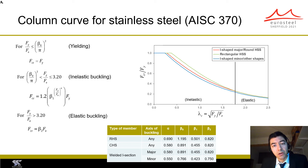The continuous strength method permits achieving design resistances that go beyond the yield load; however, this method can only be used when the resistance of the column is not governed by global buckling. Another important difference is that in the inelastic range, the stainless steel column curves make use of an exponential coefficient alpha. The introduction of this coefficient allows more flexibility in terms of the shape of the buckling curve, and therefore permitted the development of buckling curves that agree with test and numerical predictions more closely.